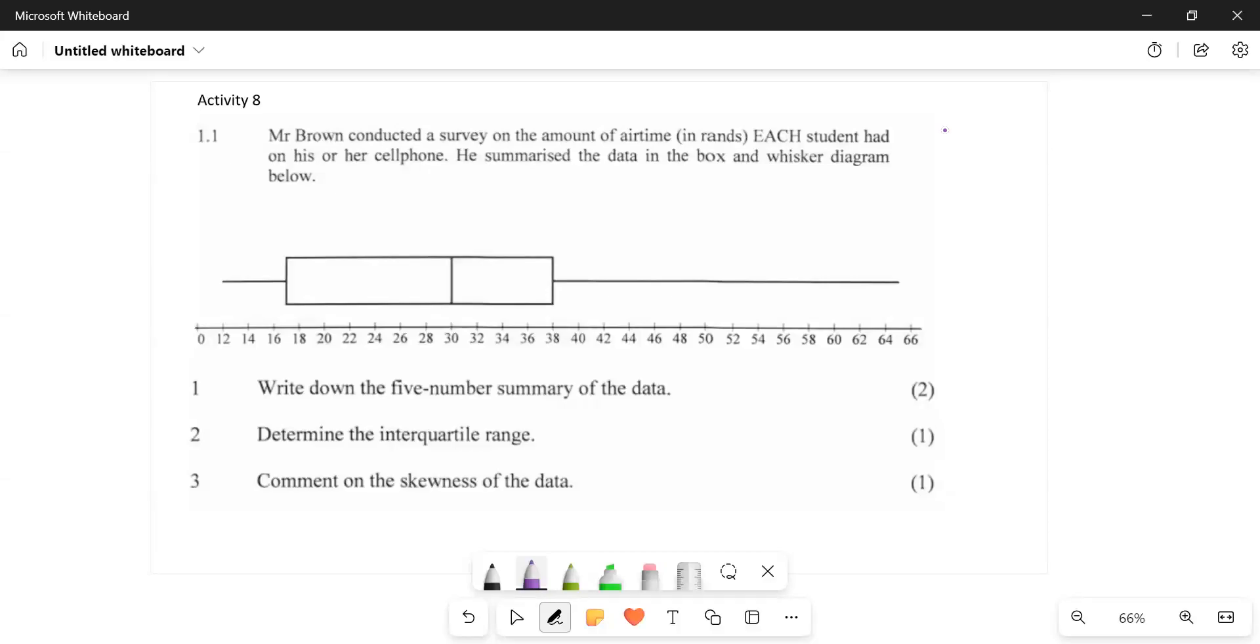Elena should be able to go from a box and whisker diagram to a five-number summary. They should be able to go from a five-number summary to a box and whisker diagram. So far we knew how to get the data and represent it graphically. So what if the data is already represented graphically?